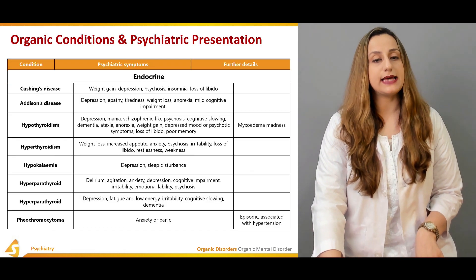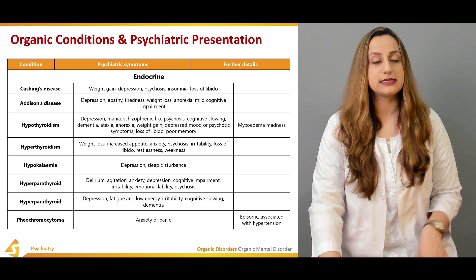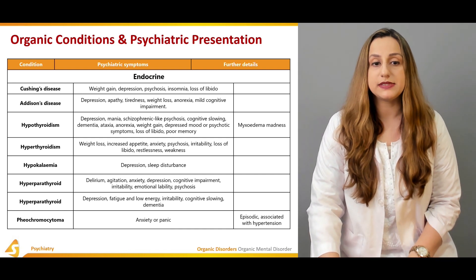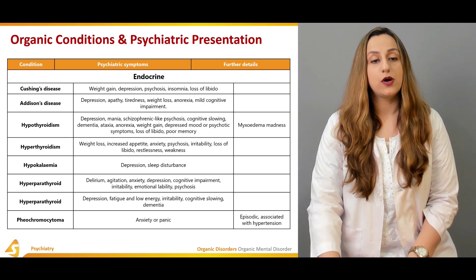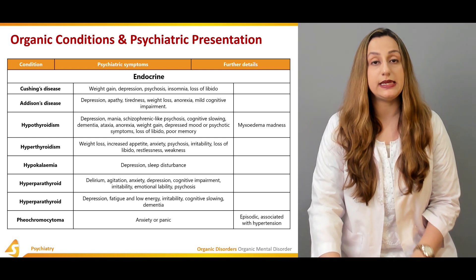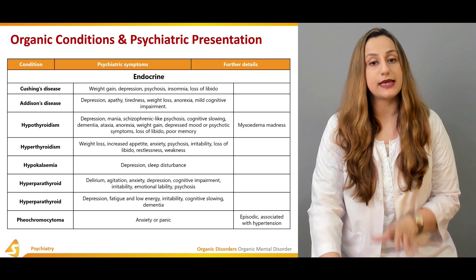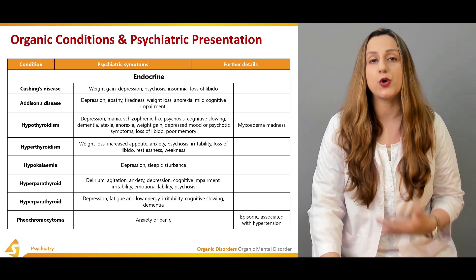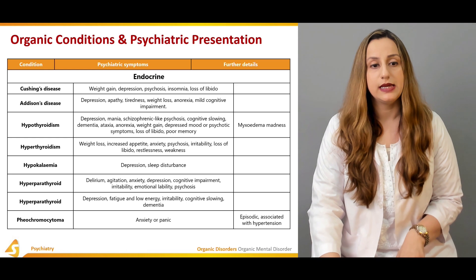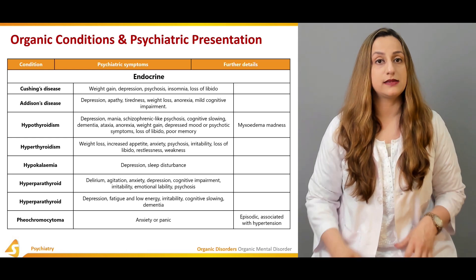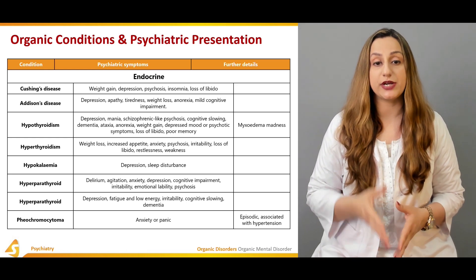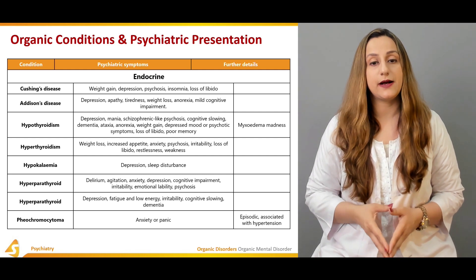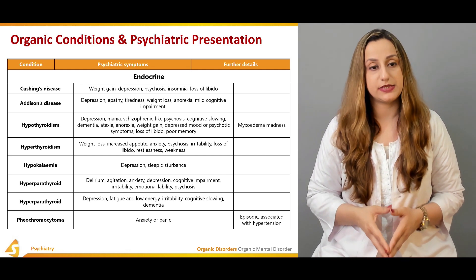Cushing's disease, an endocrine disorder, presents with weight gain, depression, psychosis, insomnia, and loss of libido. Addison's disease presents with depression, tiredness, weight loss, anorexia, and mild cognitive impairment.